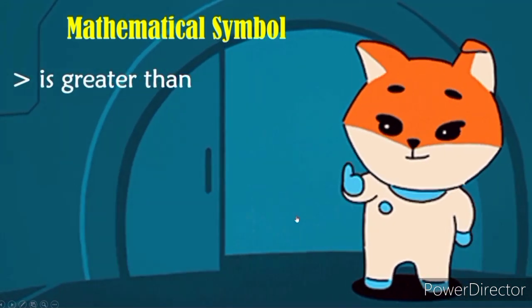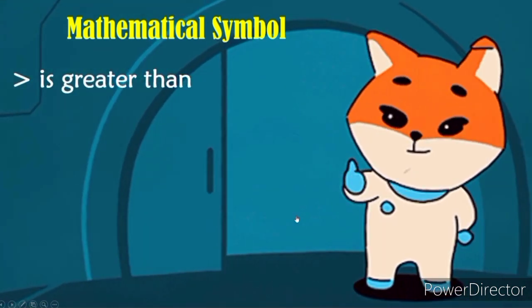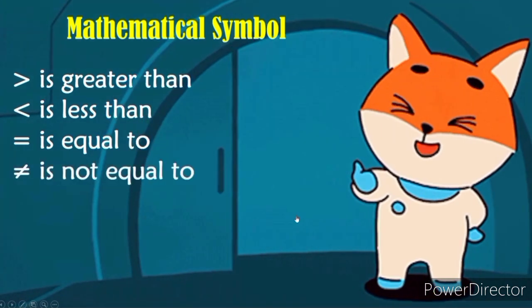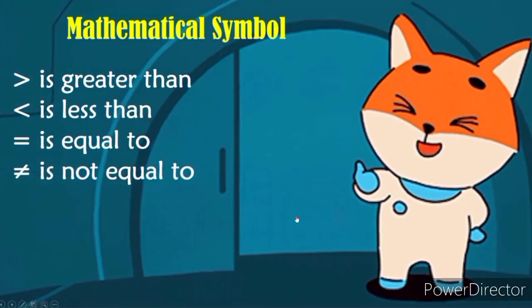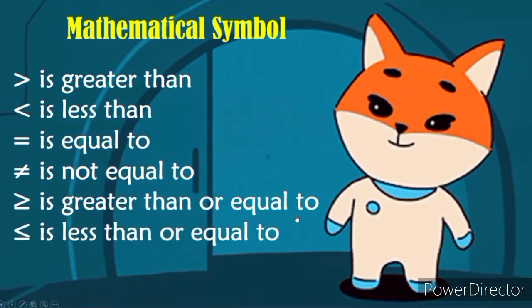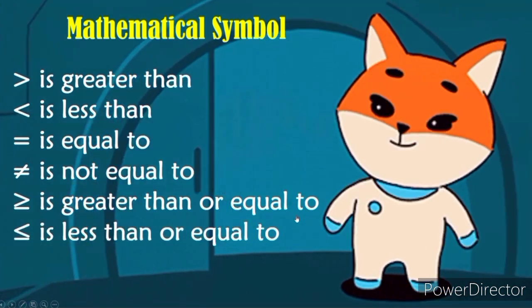Now let's proceed with our mathematical symbol. First, we have greater than. Then we have this symbol less than. The next one is equal. And this symbol is not equal to. This symbol is greater than or equal to. For this one, we have less than or equal to.